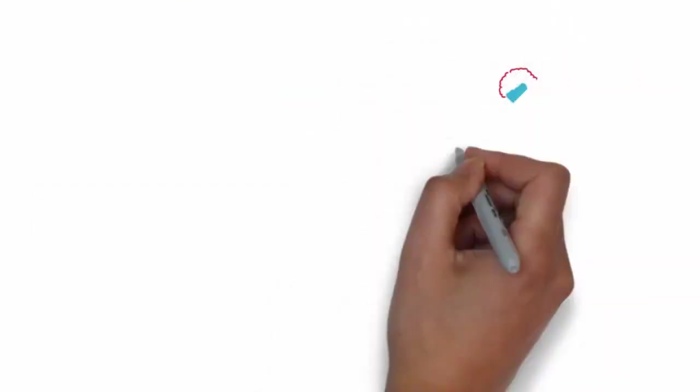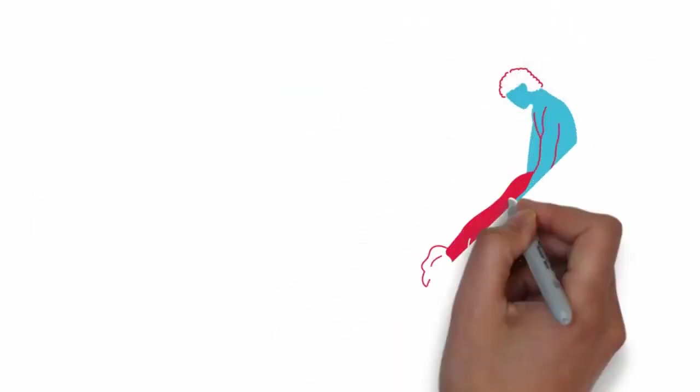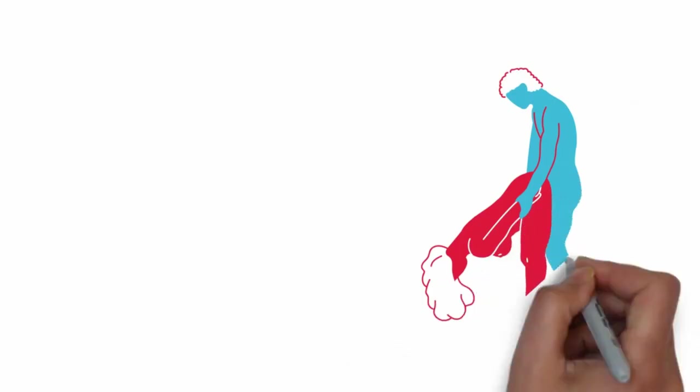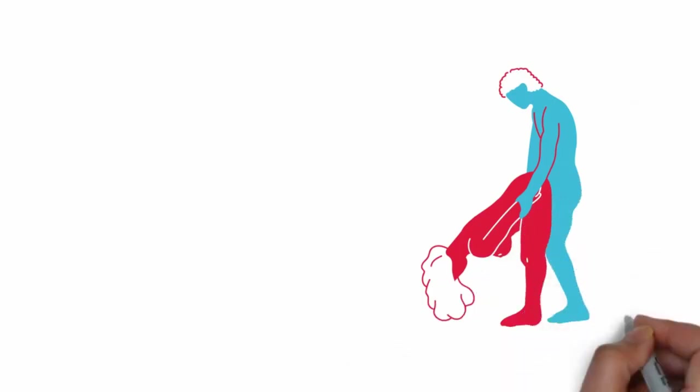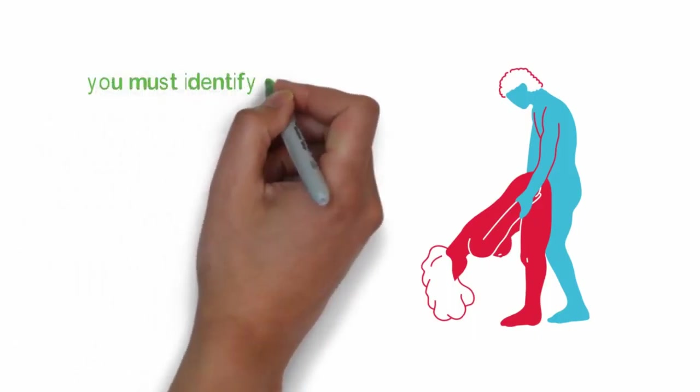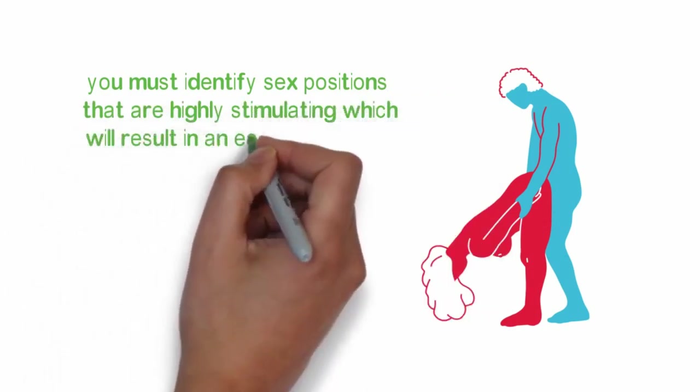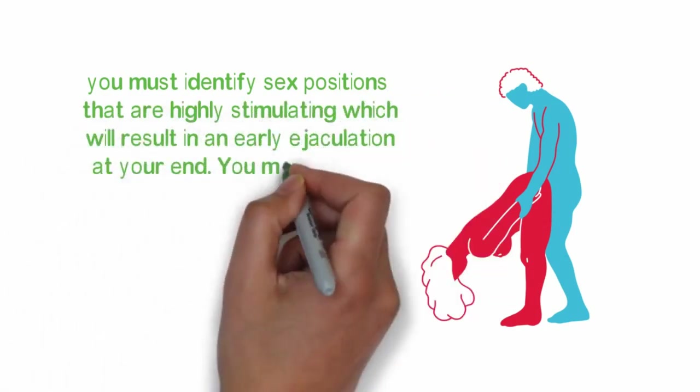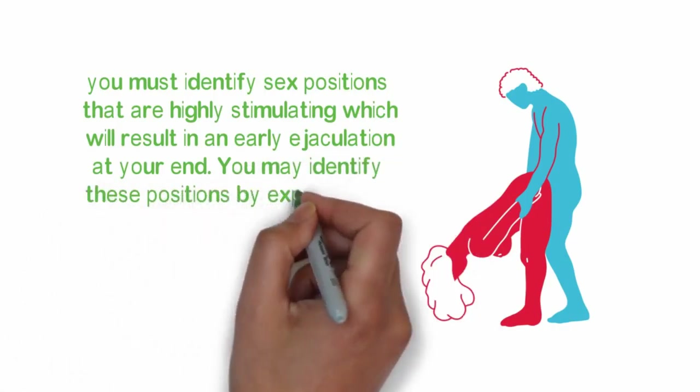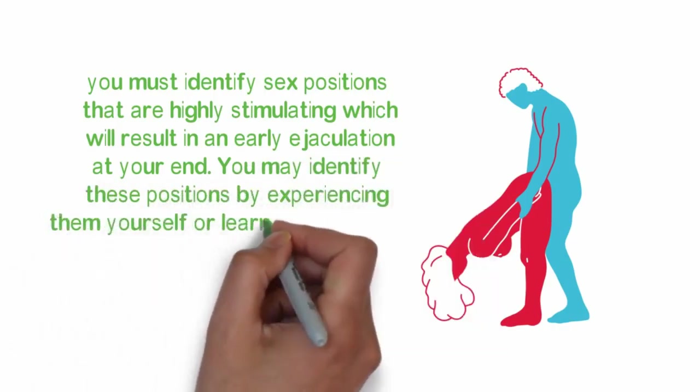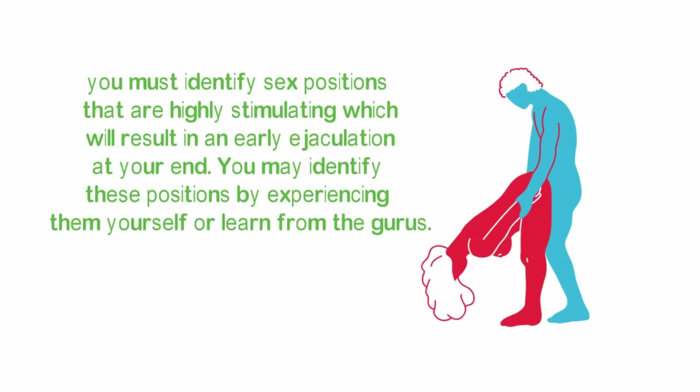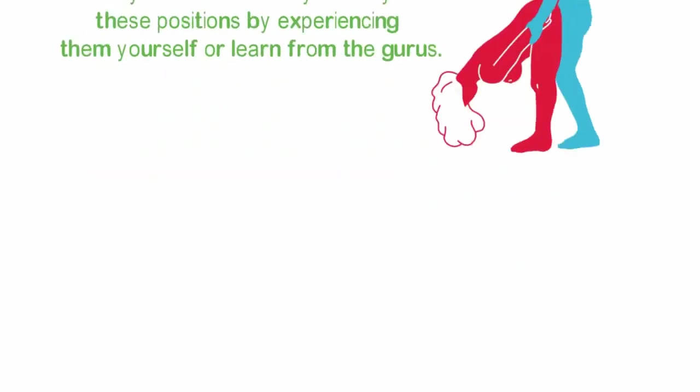Certain sex positions are highly stimulating and will speed up your ejaculation before you or your partner is ready. To know how to last long in bed, you must identify sex positions that are highly stimulating, which will result in an early ejaculation at your end. You may identify these positions by experiencing them yourself or learn from the gurus.